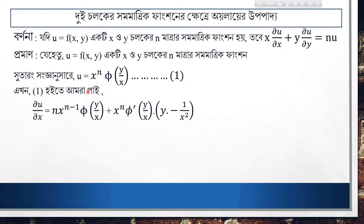When we differentiate x to the power n with respect to x, we have n times x to the power n minus 1, times phi of y by x. Then x to the power n times the derivative of phi of y by x, which is phi dash of y by x.